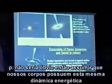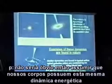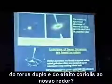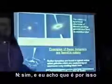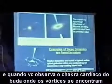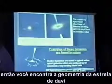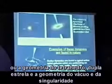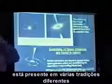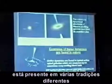Are you saying that the double torus Coriolis effect means we can imagine our bodies have that same type of energy pattern around us? Yes. That's why I think the Buddhist tradition shows a vortex entering at the crown chakra and then at the root of the spine, meeting in the heart center — reproducing that very dynamic. When you look at the heart center of the Buddha where the vortex meets, there you find the geometry of the Star of David, the double star tetrahedron, the geometry of the vacuum — the singularity. It's present in many different traditions.